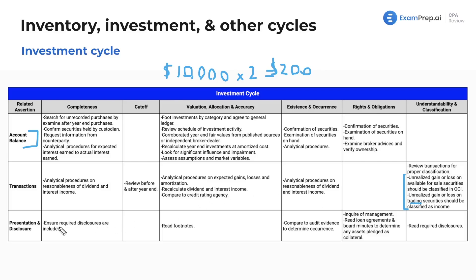For presentation and disclosure, you want to ensure that required disclosures are included — just read those footnotes. For existence and occurrence, compare to evidence to determine occurrence: look at the actual buying and selling documents from the brokerage to make sure it actually occurred. And for rights and obligations, inquire of management and read the loan agreements and board minutes to determine if any of these investments — stocks, bonds — are actually pledged as collateral.